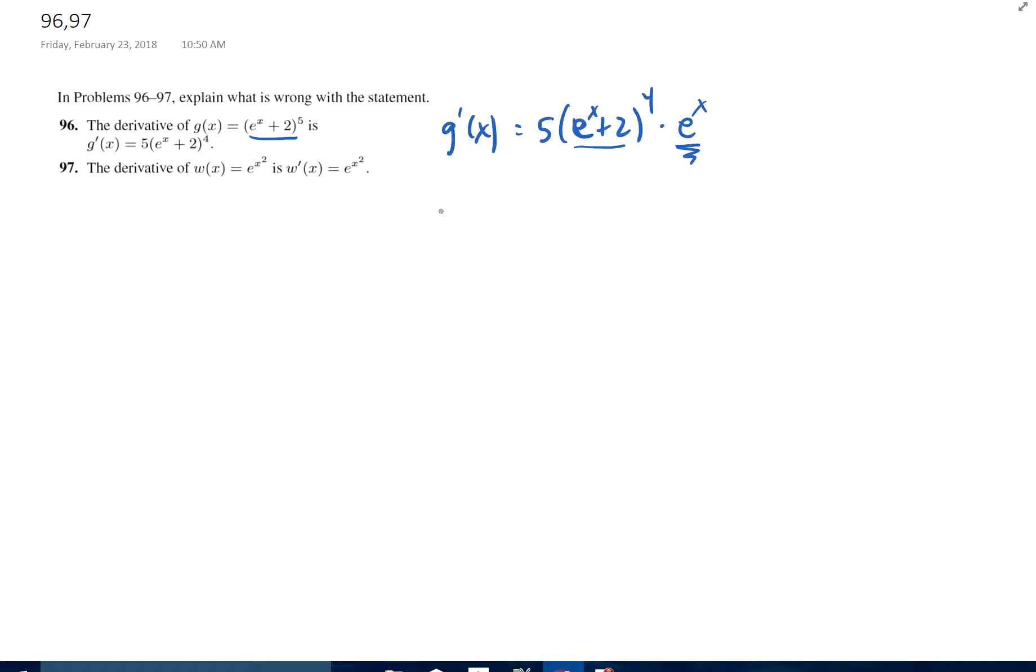And 97, w of x equals e to the x squared. Of course, it's the same thing—w prime of x is e to the x squared, and then the chain rule says times the derivative of the inside function, times 2x. Alright, there you have it.